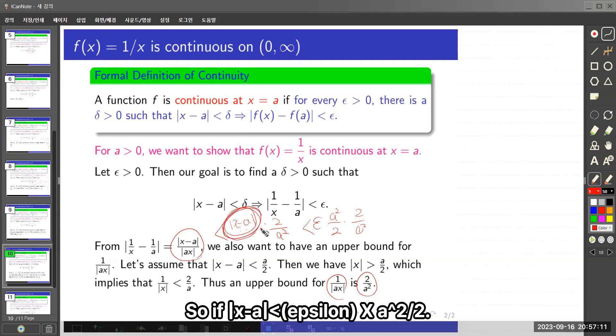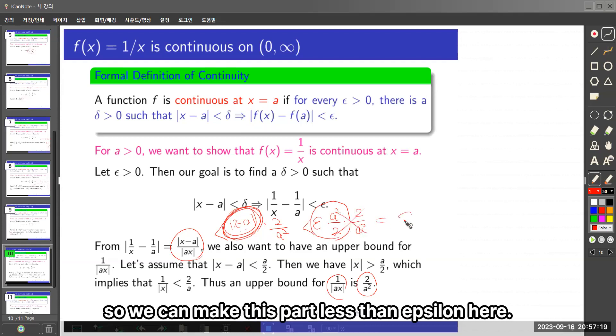So if the absolute value of x - a is less than epsilon times a²/2, then this cancels. So we can make this part less than epsilon.